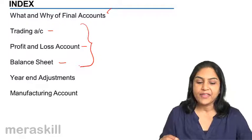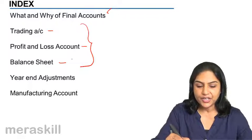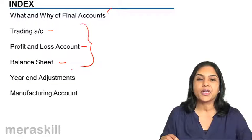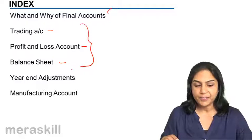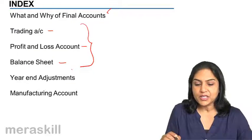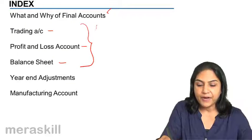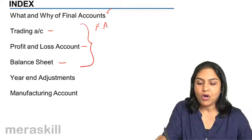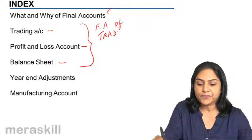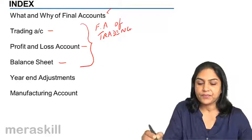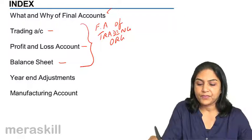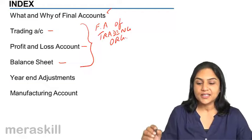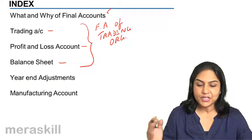And then also finally the relationship between trading, profit and loss and balance sheet. These three statements would be the final accounts of trading organizations, sole proprietors in the trading business.